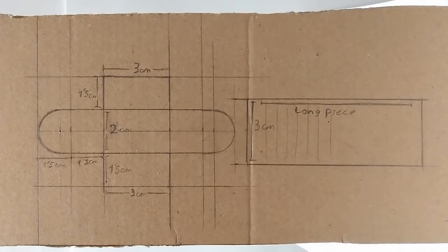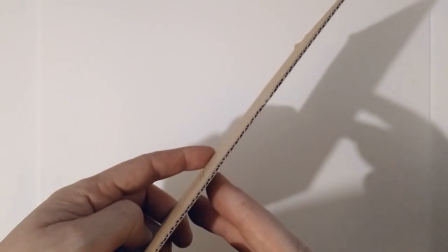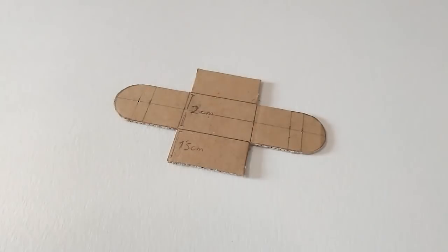First, draw and cut out these two pieces on cardboard. The long one, make sure you draw it perpendicular to the corrugations of the cardboard. We need to bend this one to make a box.